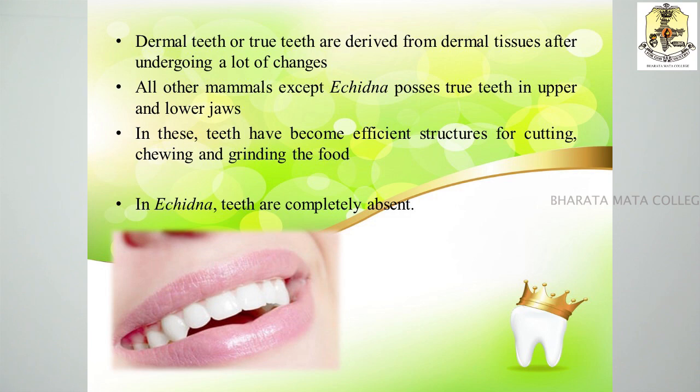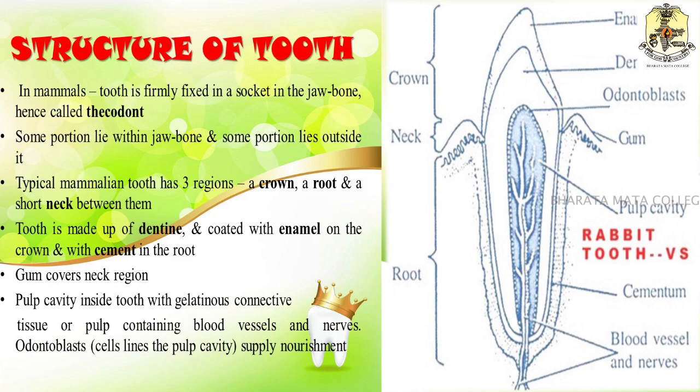In the case of echidna, the spiny anteater, teeth are completely absent. Coming to the structure of a tooth in mammals: the tooth is firmly fixed in a socket in the jaw — this condition is known as thecodont dentition, where some portion lies within the jaw bone and some portion lies outside. A typical mammalian tooth consists of three regions: a crown, a root, and a neck region. The tooth is made up of dentine, coated with enamel on the crown region and with cement on the root region. The gum covers the neck region between the root and the crown. The pulp cavity inside the tooth is covered with gelatinous substance and contains blood vessels and nerves, and it is lined by odontoblasts which help in the nourishment of the teeth.